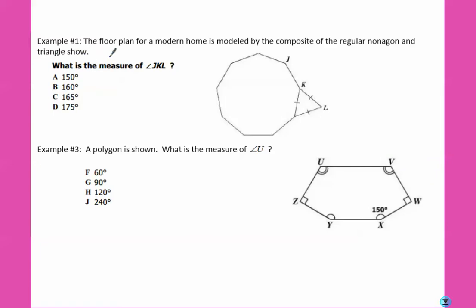Example number one: the floor plan for a modern home is modeled by the composite of the regular nonagon, which means it has nine sides, and the triangle shown. Find the measure of angle JKL. So JKL is this outside angle here. Since we know the sides of the triangle are all the same, that means all the angles are the same. If you recall, the angles of a triangle add up to 180. If we divide that by three, we get that each is 60 degrees.